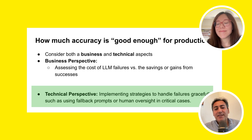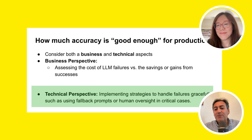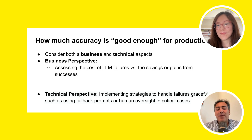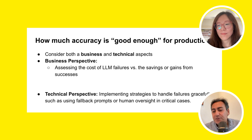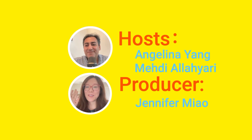If the use case is very critical — for instance, reserving flights using LLMs — if that goes wrong, or instead of charging $100 the system charges $1,000, things like that — you always have to look at the use case and based on that decide how complicated you want to go and how much accuracy is good enough. Thank you so much, Mehdi. I'll see you next time.